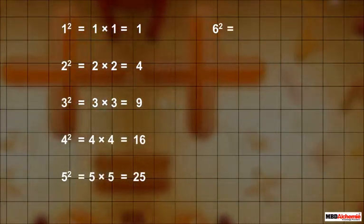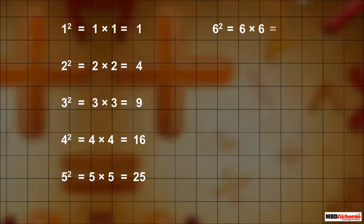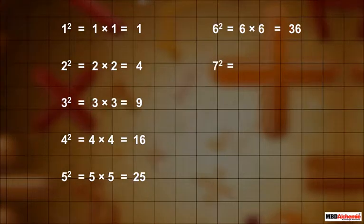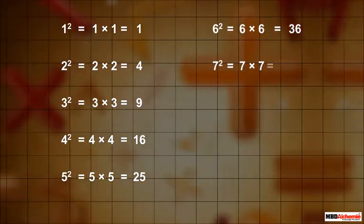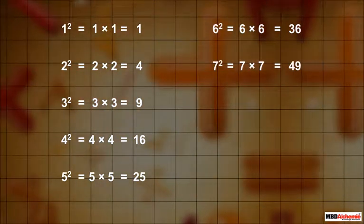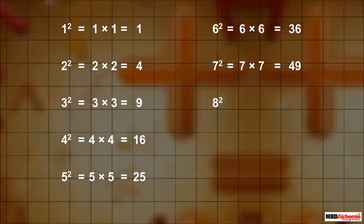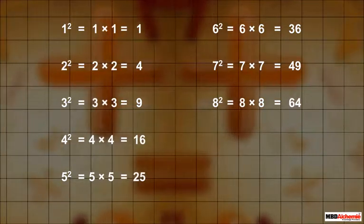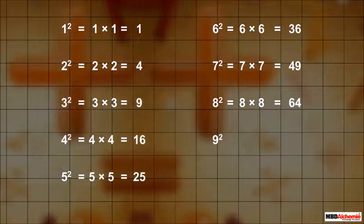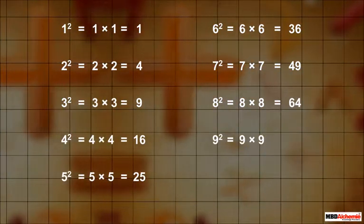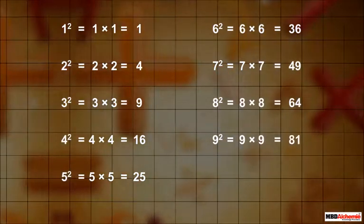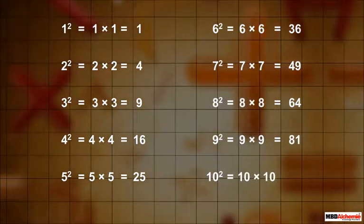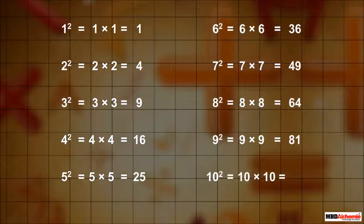The square of 6 is written as 6 into 6, which is equal to 36. The square of 7 is written as 7 into 7, which is equal to 49. The square of 8 is written as 8 into 8, which is equal to 64. The square of 9 is written as 9 into 9, which is equal to 81. The square of 10 is written as 10 into 10, which is equal to 100.